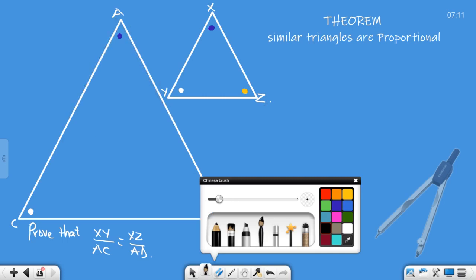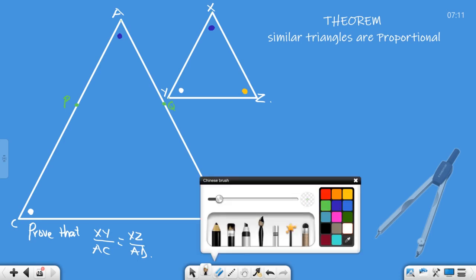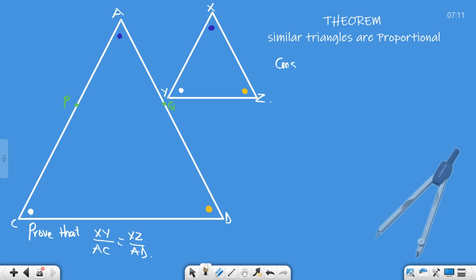To construct, this is what we're going to do. We're going to mark off a point here and mark off a point here. We can call this P and we can call that Q, such that XY is equal to AP.